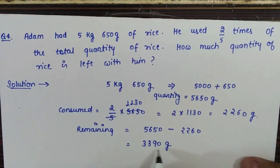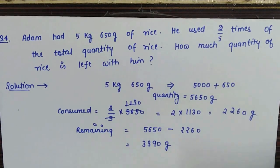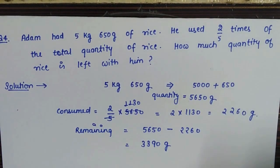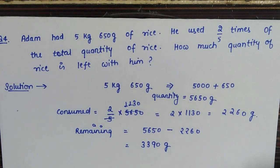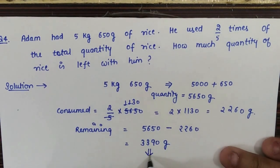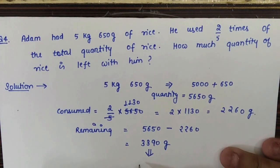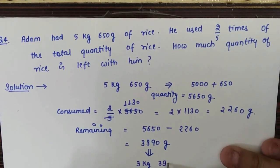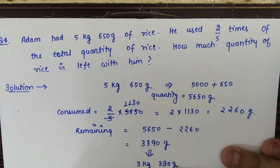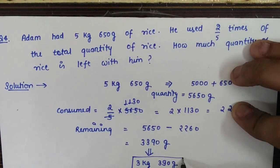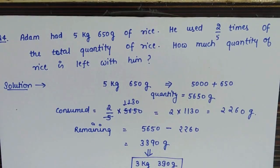This is the remaining quantity in grams. If the answer options are given in kilograms, we can convert it back: 3390 grams equals 3 kilograms 390 grams. That is the answer for this question.